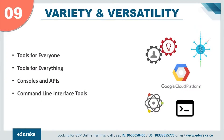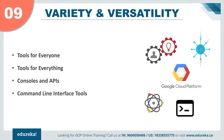Coming up to reason number nine, we have variety and versatility. Once you get started on the Google Cloud Platform, there are tools for everyone and for everything in the IT industry. You can use all these products for development like the developer's console web UI and the command line interface tools, be it the Windows, Mac or Linux environment. You also have the option to use the RESTful APIs. Google has its own set of managed APIs that can be used in different applications for different purposes, and these APIs are very easy to work with.